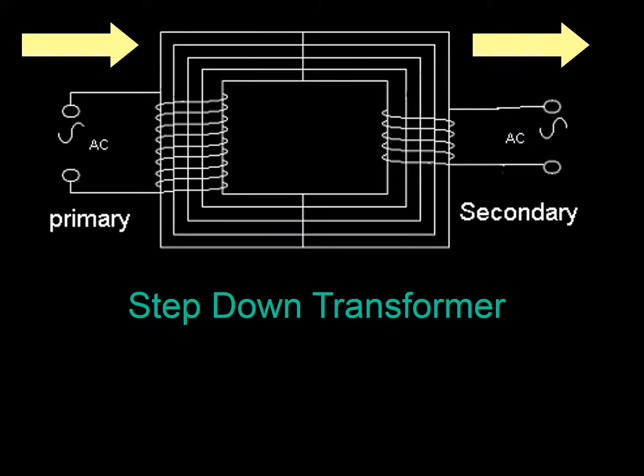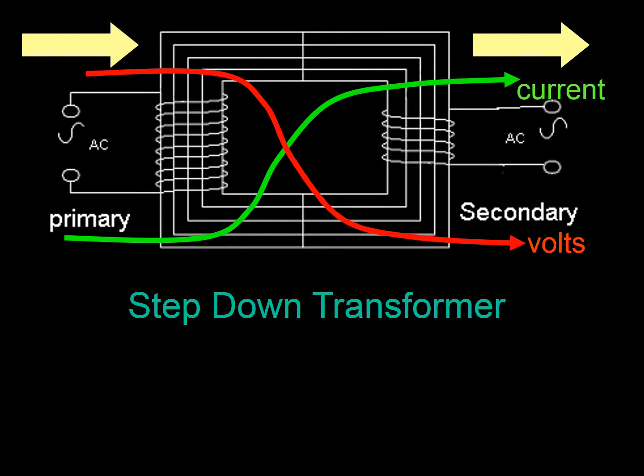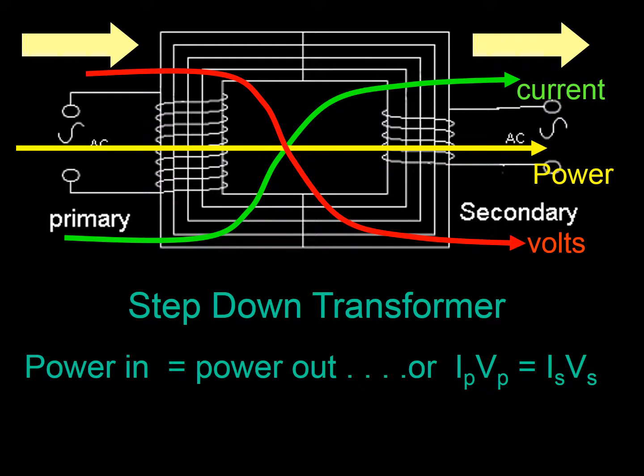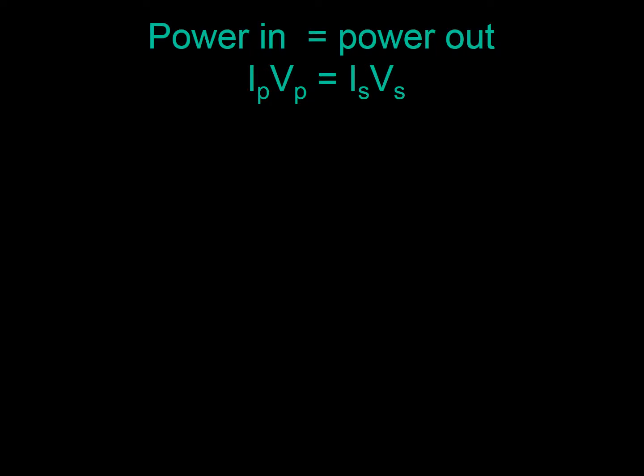The step down transformer is the exact opposite. The potential difference drops, the current increases, but as ever, the power stays the same, because it's so efficient. Same thing again though, IPVP is equal to ISVS. It does look horrible, but it becomes a little bit easier when you actually start using it.